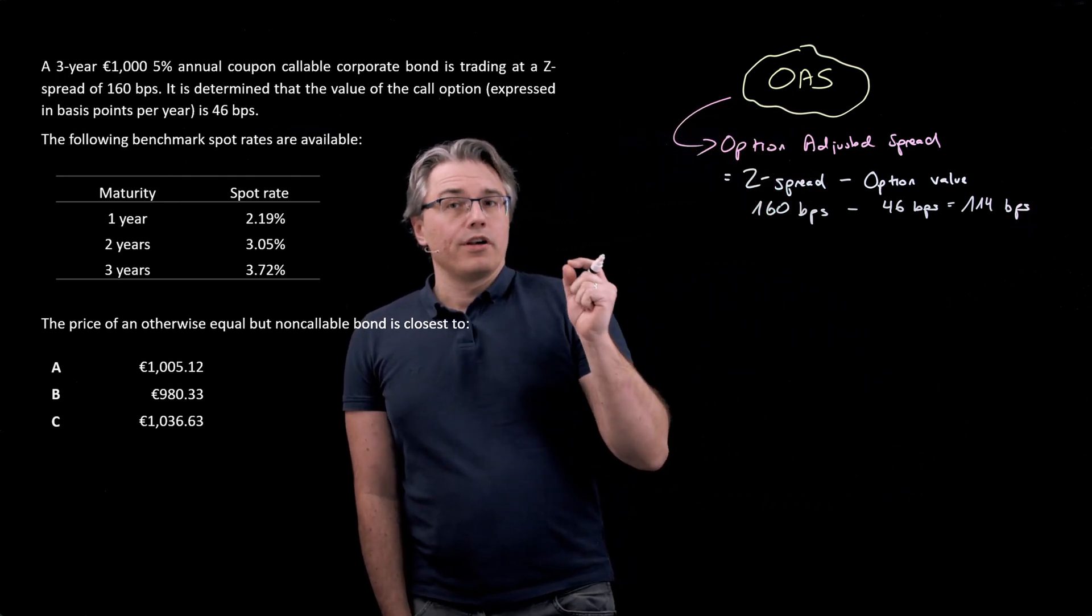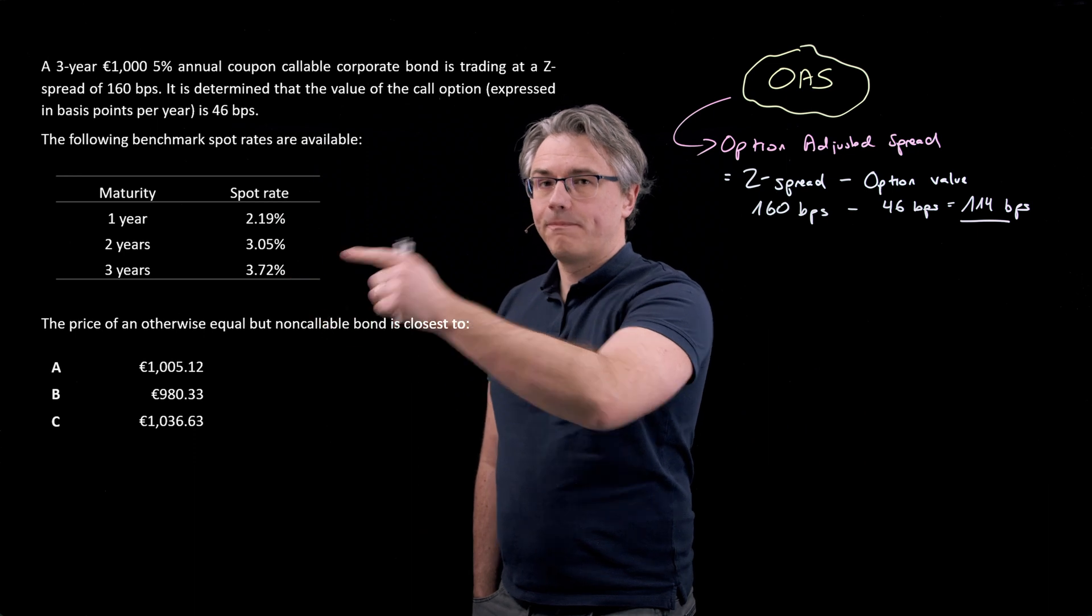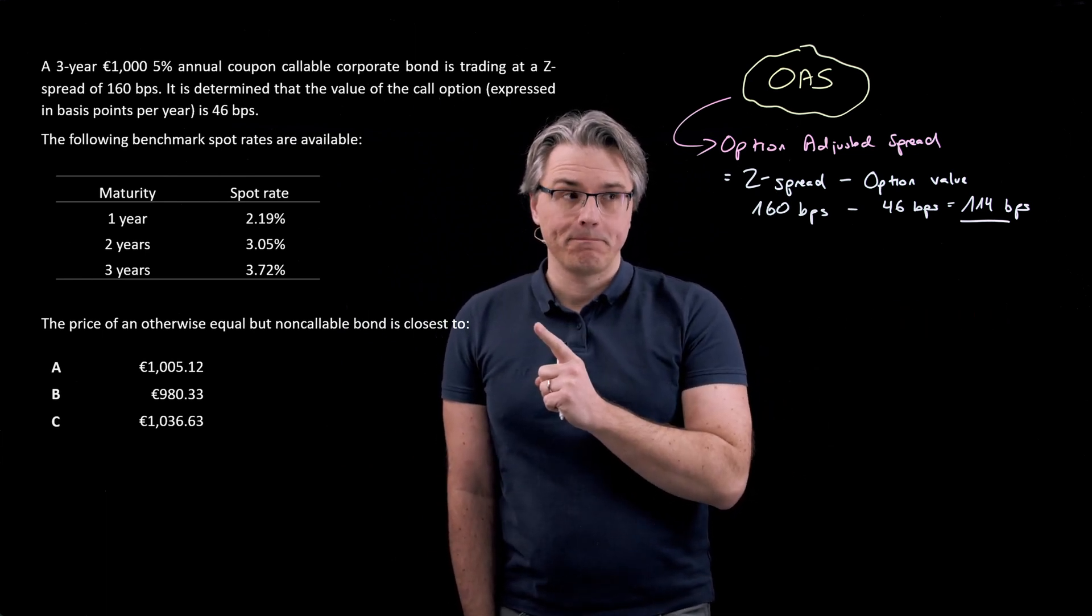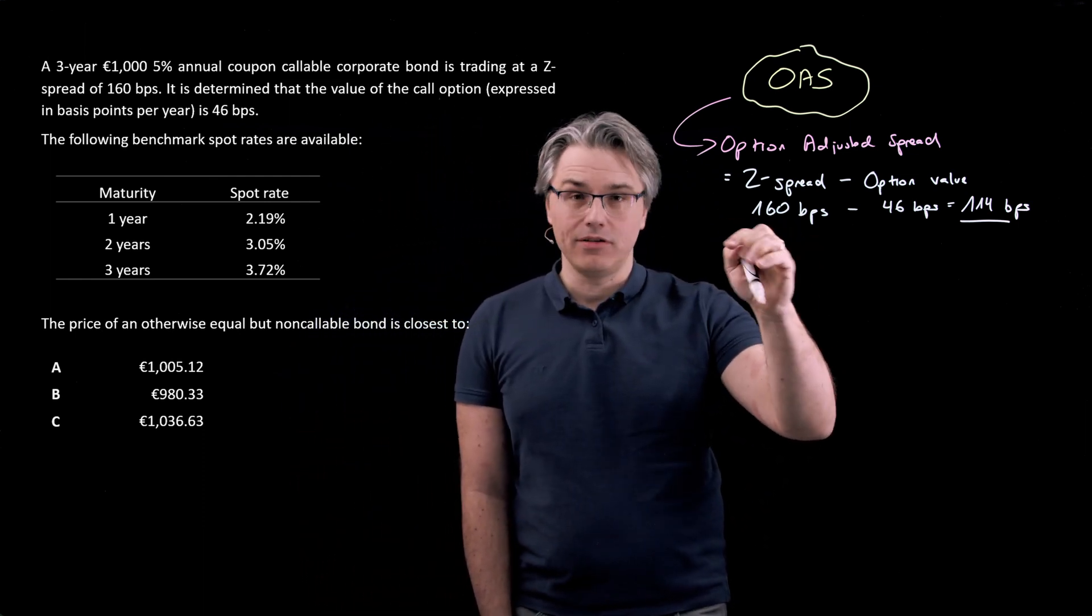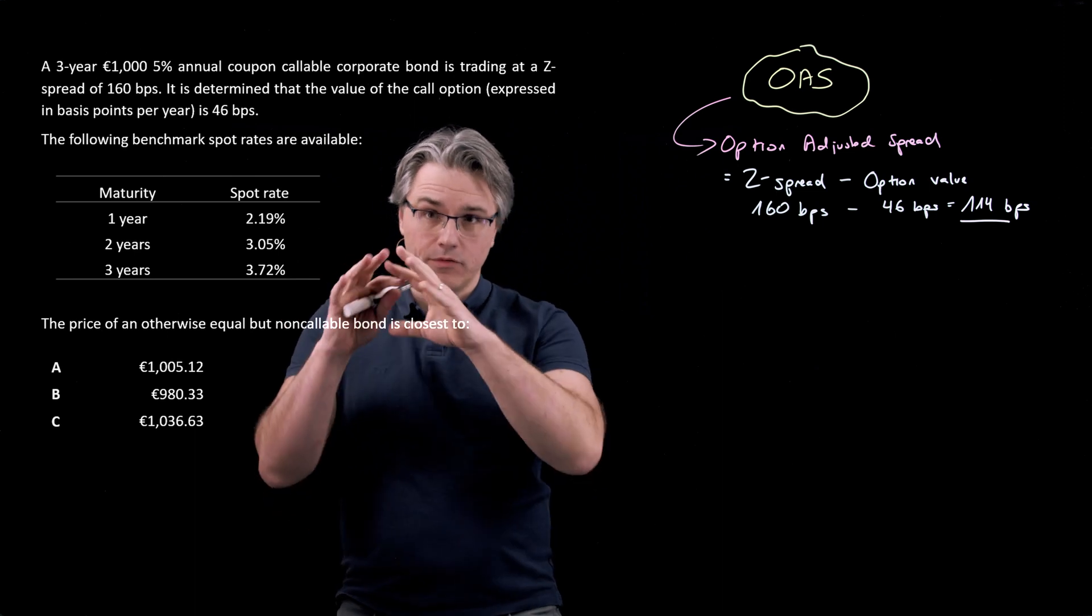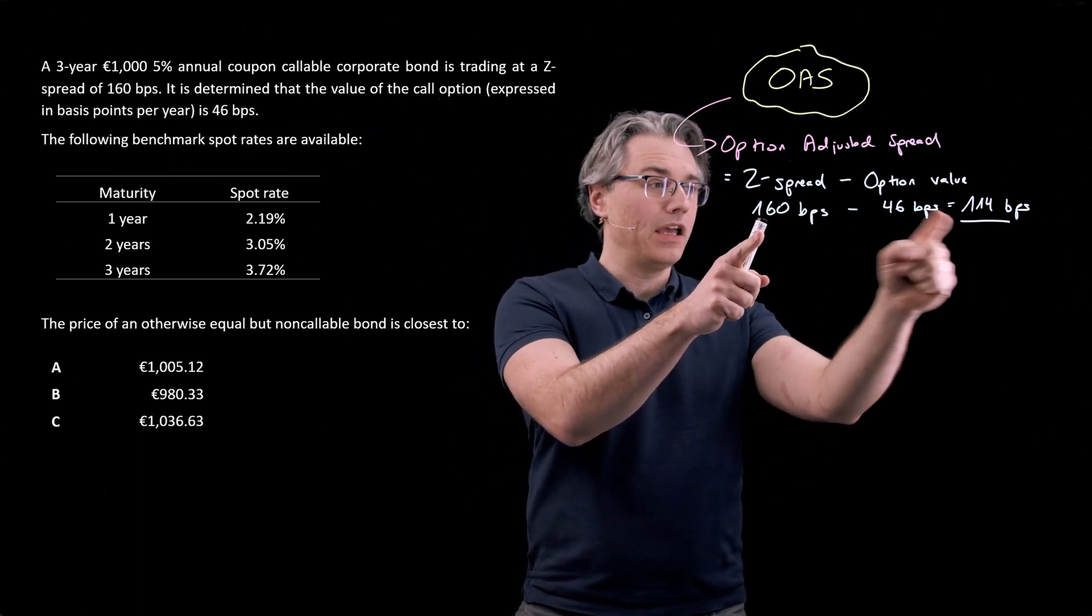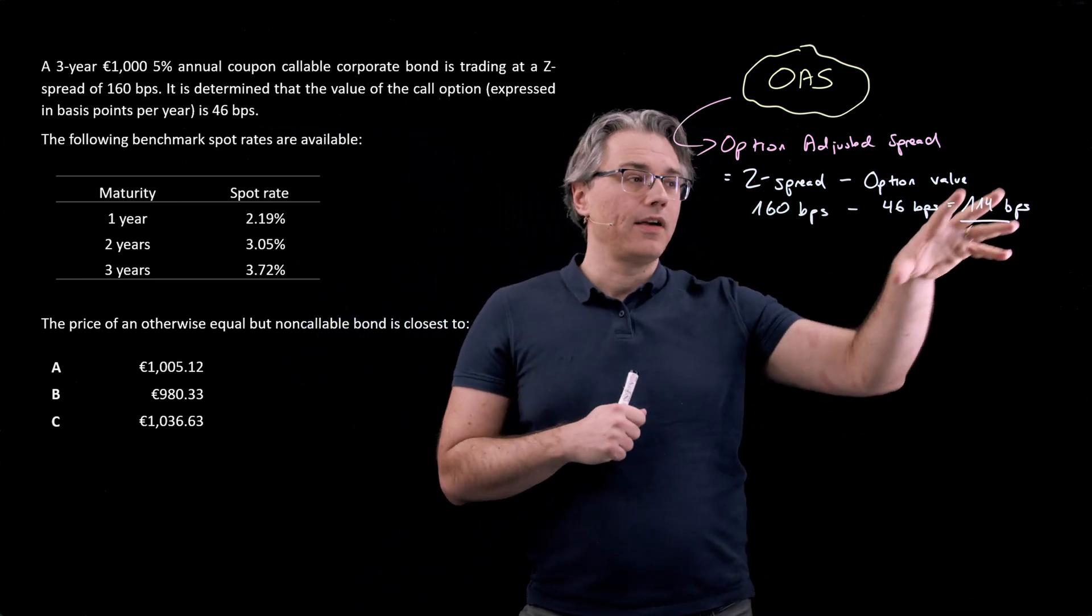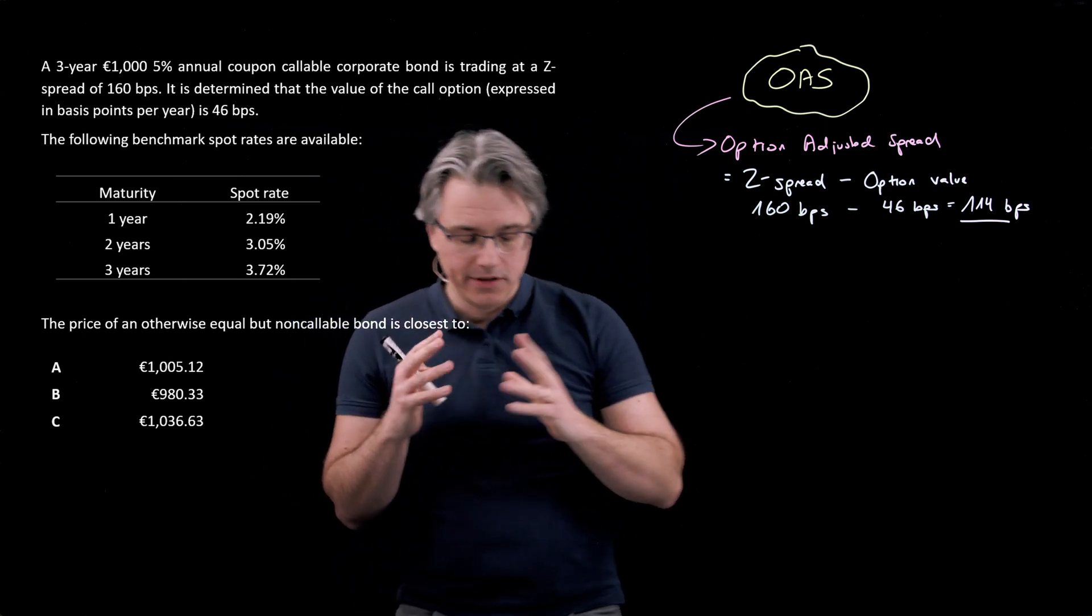We're going to use this as an add-on factor to these spot rates for the purposes of discounting the cash flows on the instrument. Just like in a previous video I used the Z-spread to do exactly that. Add the Z-spread of 1.6%, 160 basis points, to every spot rate from the benchmark spot curve to discount cash flows. Now I'm going to do the same thing, but with a slightly lower add-on factor. Obviously, because we're going to be discounting using a slightly lower discount factor, we're going to get a higher result.